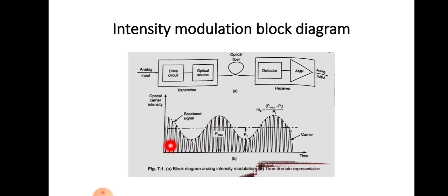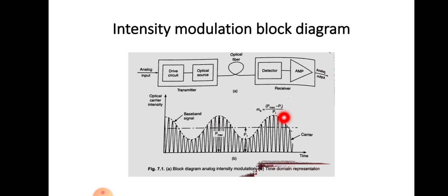You can see that the carrier amplitude will be high at the highest intensity of the modulated signal, and the carrier amplitude will be lesser at the lowest intensity of the modulated signal. The modulation index is equal to (Pmax minus Pi) divided by Pi, where Pi is the unmodulated carrier power and Pmax is the maximum power of the carrier.